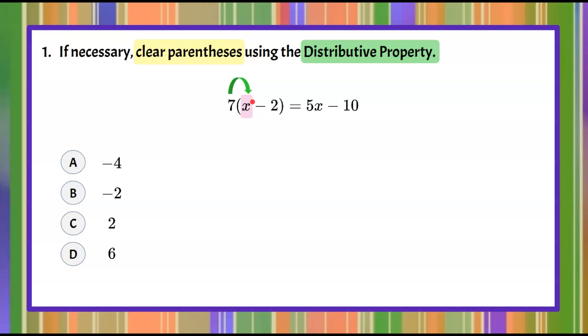So 7 multiplied by the variable x gives me 7x. Then 7 multiplied by the term negative 2 is negative 14 and bring down equals 5x subtract 10. So we have now completed step one. We've cleared the parentheses and we have an equivalent expression.